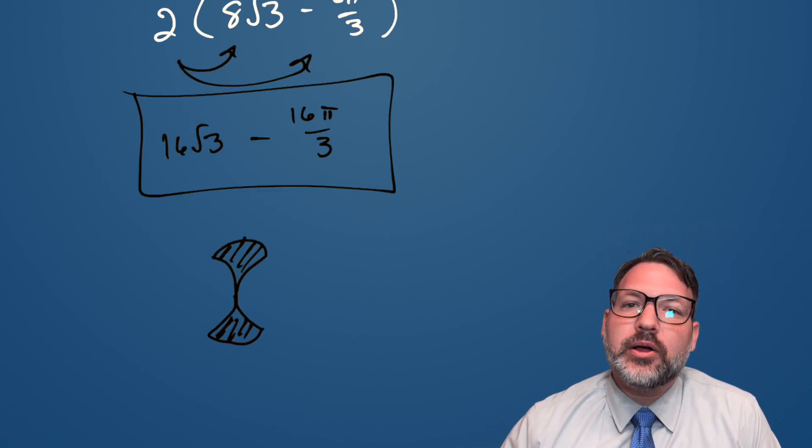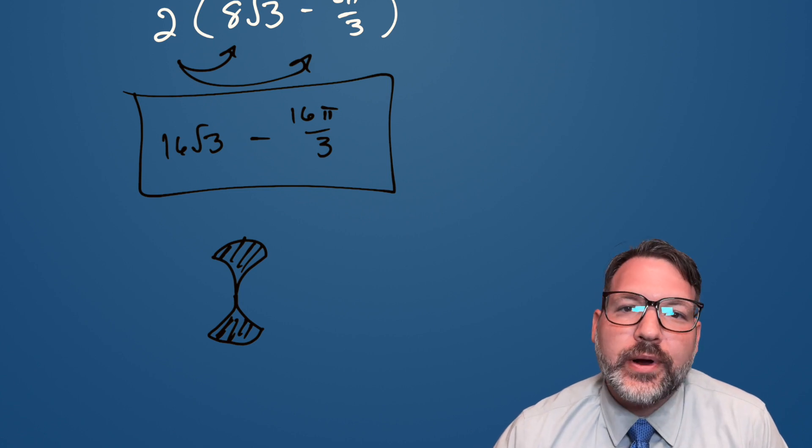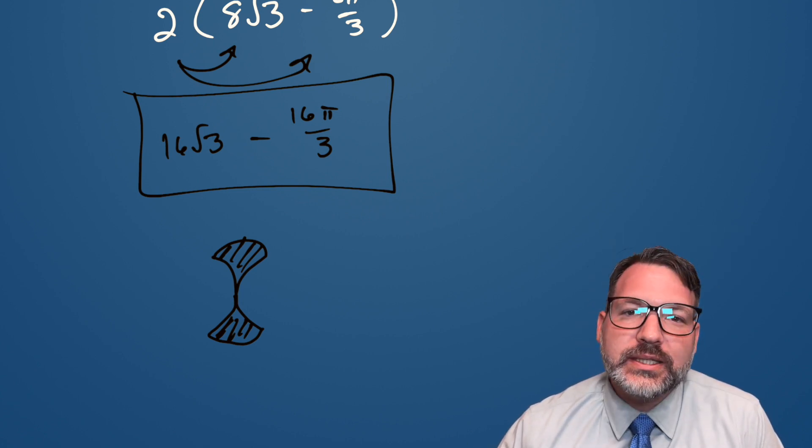That shaded region, that kind of bulging out, bulging in, equilateral triangle sort of area ends up being 16√3 minus 16π over 3.